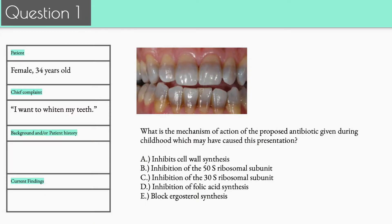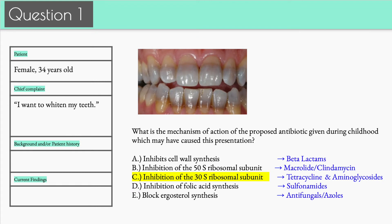Let's get started with question number one. We have a female patient, 34 years old. Chief complaint: I want to whiten my teeth. They're not giving you any background, and then patient history or current findings. We have a picture of the patient's teeth and the question says: what is the mechanism of action of the proposed antibiotic given during childhood which may have caused this presentation?